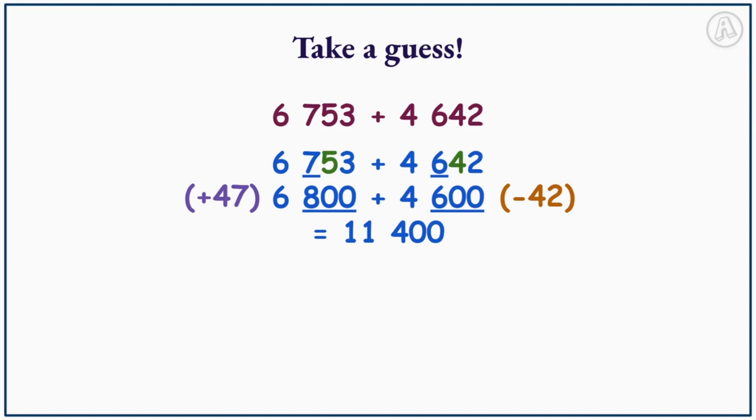So how can we use this information to calculate our actual answer? We can calculate the answer by using the total error to correct the answer. We call this compensating.